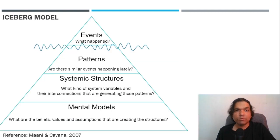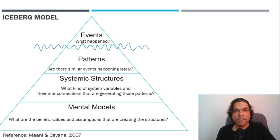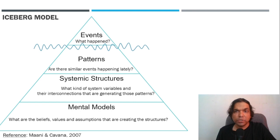The Iceberg model lets us investigate the root cause of a problem. The iceberg is a metaphor to understand that we can only see the tip — in this case individual problems or events — which is just 10% of the total mass of the iceberg. The rest 90% of the mass is underwater, which tells us why those individual events are happening.